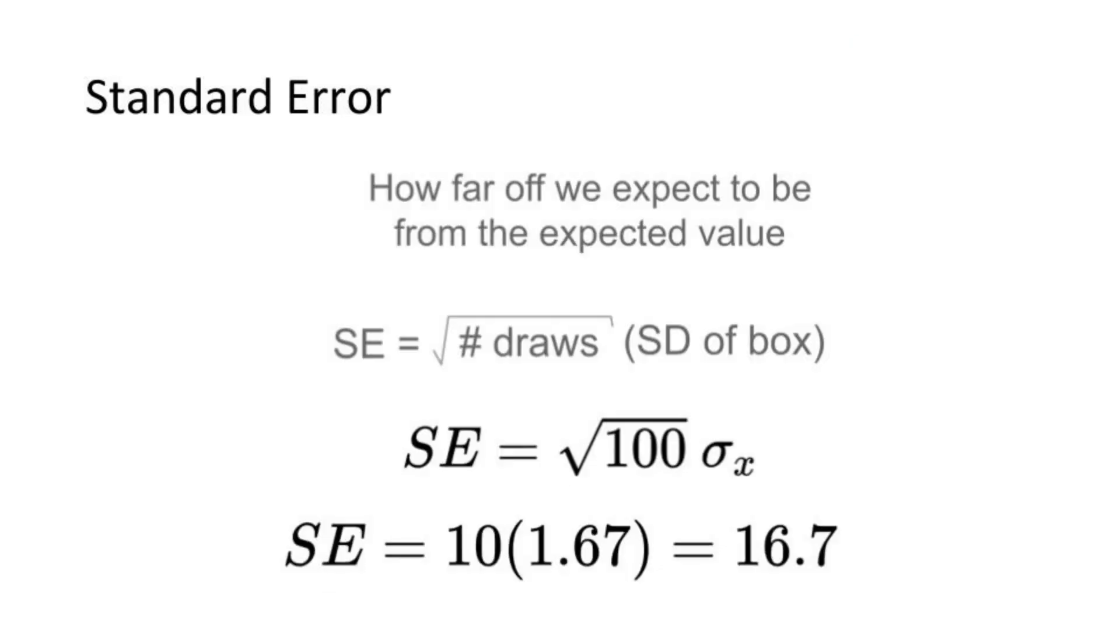So our formula here is the square root of the number of draws times the standard deviation of the box, which in our case is the square root of 100 times the standard deviation of 1 roll, which is 1.67.